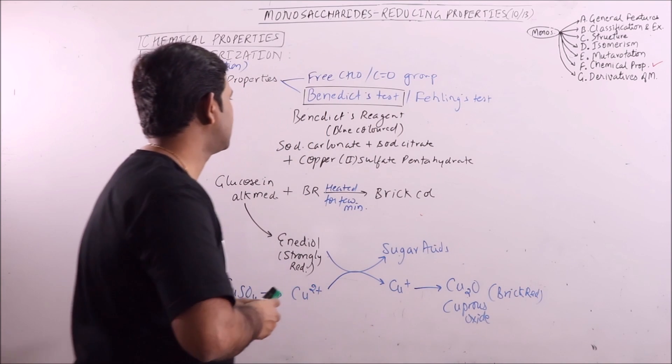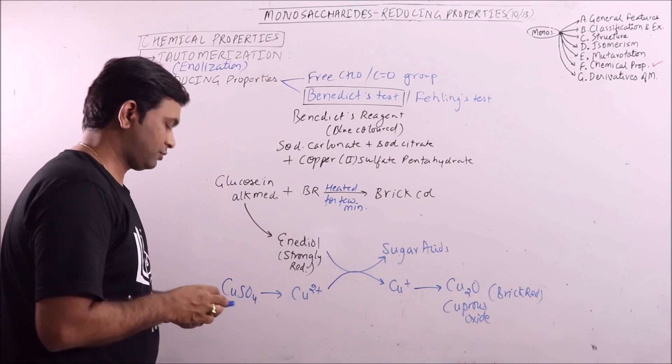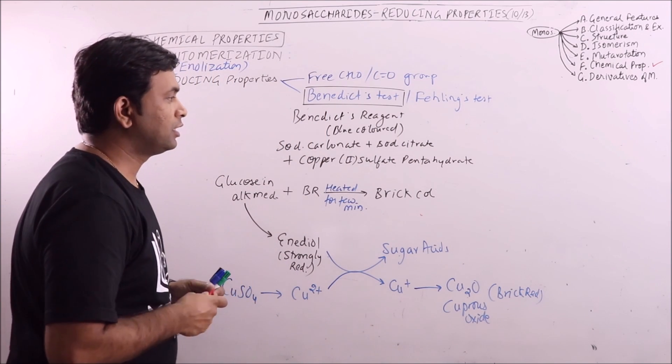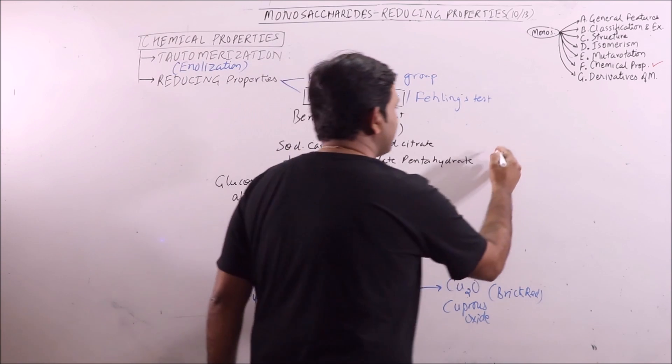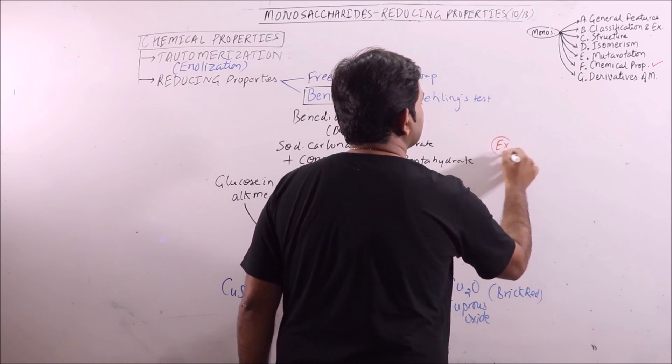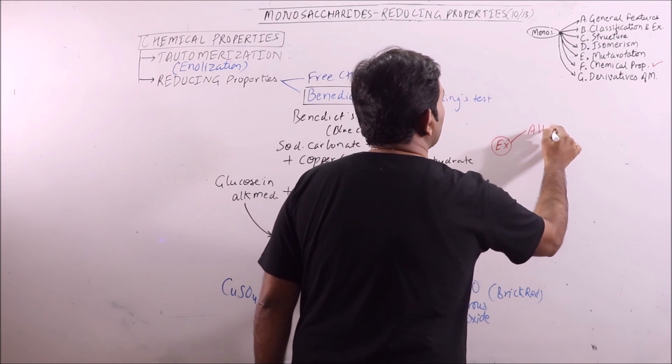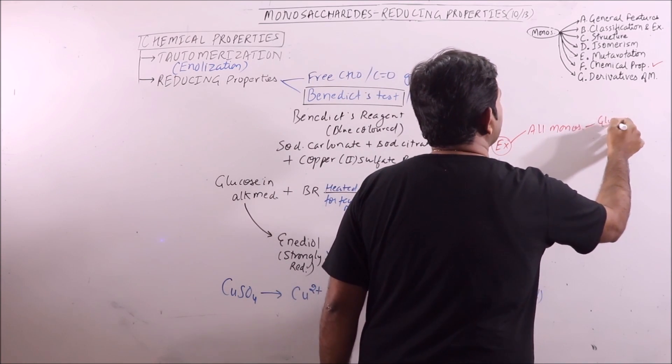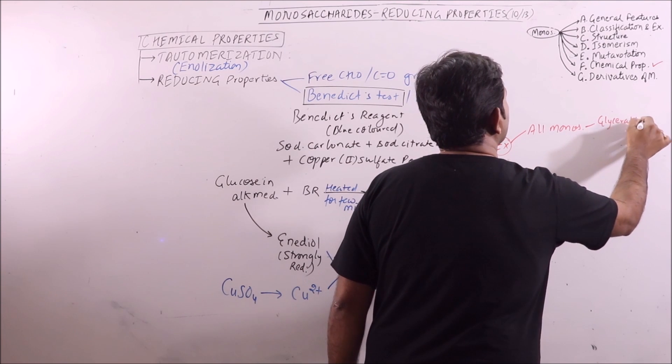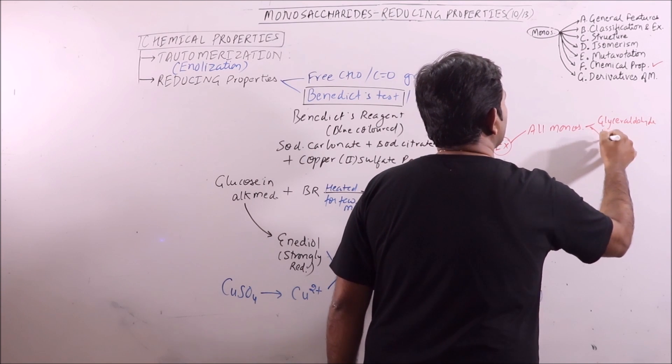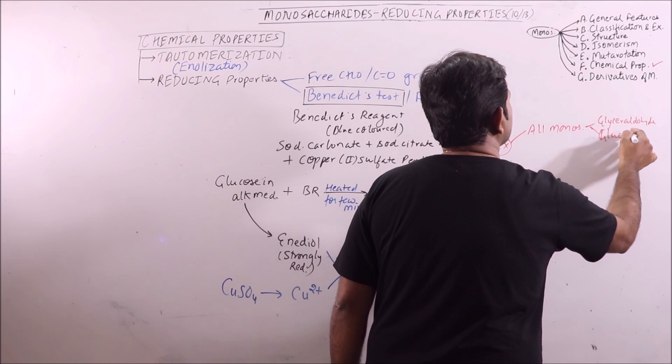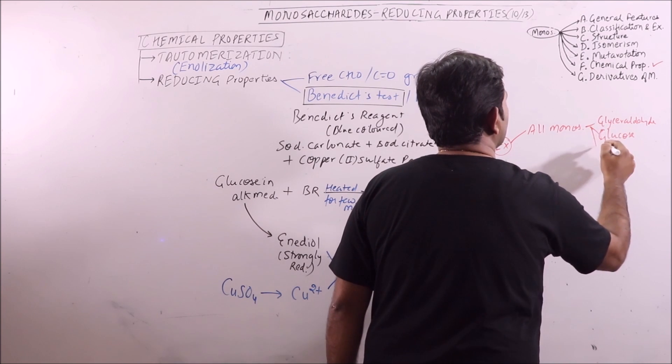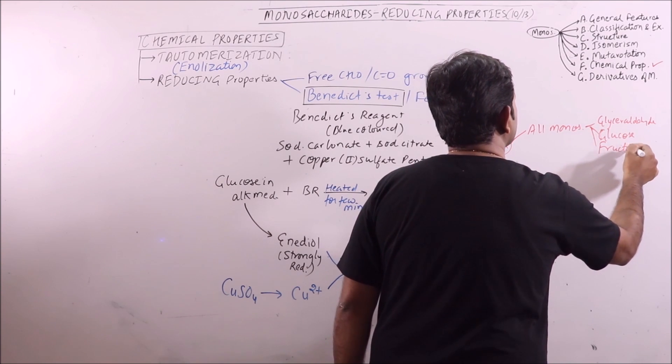So this gives the presence of reducing sugars. Now, what are the examples of reducing sugars? All monosaccharides like glyceraldehyde, glucose, fructose, etc.